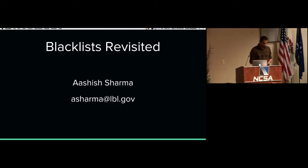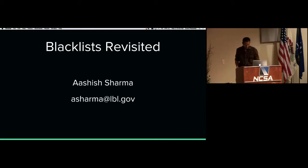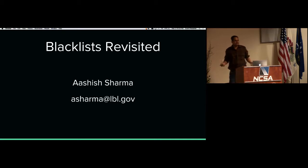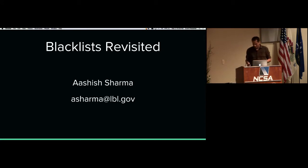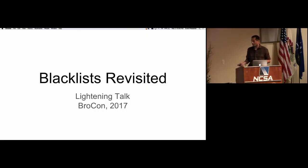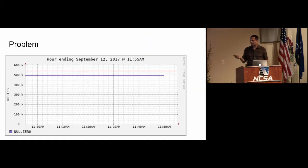This is going to be a five-minute talk with 25 slides. I wanted to talk about blacklist revisited. We have the problem of blacklisting — blocking a number of IP addresses. Yesterday afternoon we were blocking roughly 500,000 unique IP addresses.